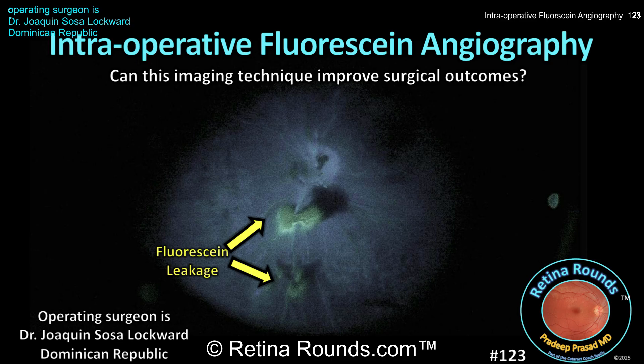Fluorescein angiography, as we know, can be a very helpful diagnostic tool for a variety of vascular diseases. For patients undergoing diabetic vitrectomy, preoperative wide-field fluorescein angiography can help to assess the location of fibrovascular proliferation, as well as central and peripheral perfusion status. This information can then be used to guide areas of membrane dissection and photocoagulation.